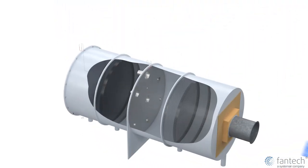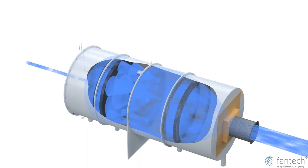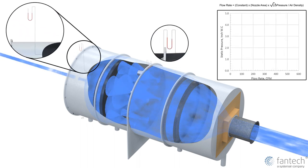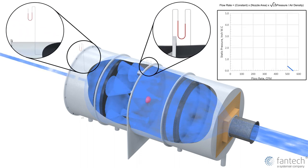In a laboratory setting, a wind tunnel is often used, where a set of nozzles and an auxiliary fan are used to precisely control and measure pressure and flow rate. Measured data is then plotted to show the fan performance curve.